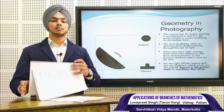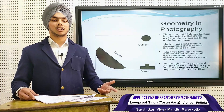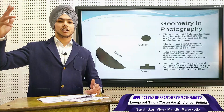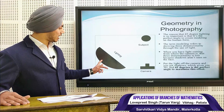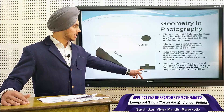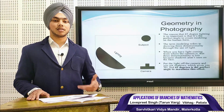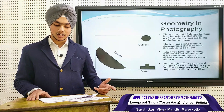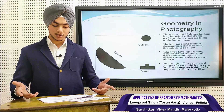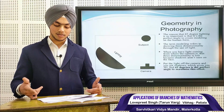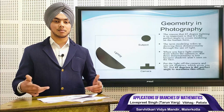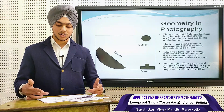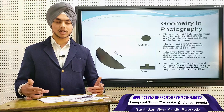Geometry is also used in photography. In the modern era, photography is very important for marriages and other events. A photographer always flashes light from the upper front at 45 degrees to the object. The reason is that 45-degree lighting is the perfect angle to create modeling on the human form. The term modeling refers to showing three-dimensionality through the use of light. When light comes from where the camera is, three-dimensionality is lost because shadows are not seen on the face. Placing light off-camera creates shadows that give a 3D effect — 45 degrees is the perfect angle to maximize this effect.